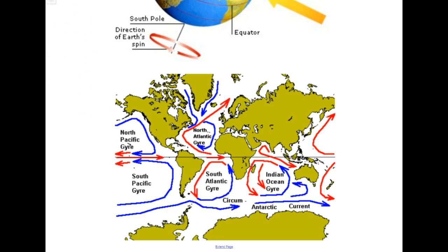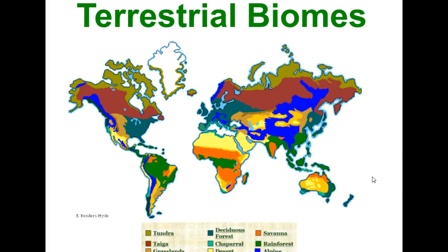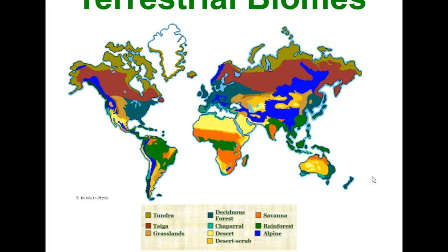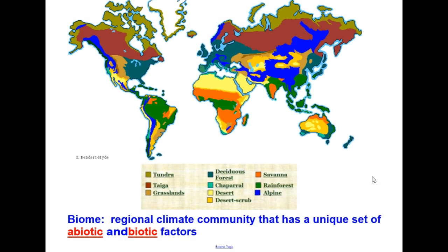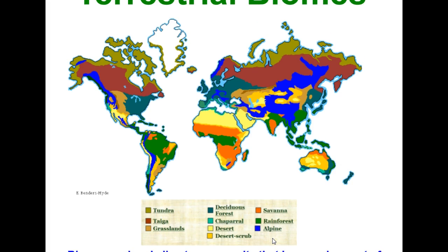Let's move on to our terrestrial biomes. Here's a really nice map with a key showing the terrestrial biomes that exist on our planet. A biome is a regional climate community that has a unique set of abiotic and biotic factors. Abiotic factors are all the non-living factors that contribute to a climate community, while biotic factors are all the living factors. Generally speaking, we have ten accepted terrestrial biomes on our planet, and the names tend to fluctuate depending on your resource — we'll use the ten provided in your textbook.